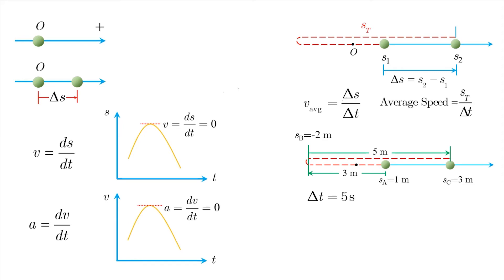In this case, the displacement is only two meters, but the distance traveled is the length of the dashed line, which is three meters plus five meters. Therefore, the average speed, which is the total distance over time, is eight over five meters per second. And it has no direction because it is a scalar quantity as we said.